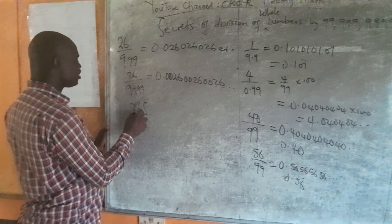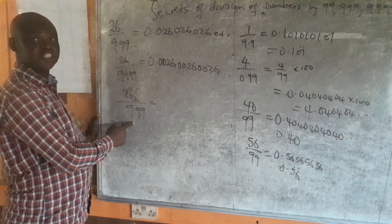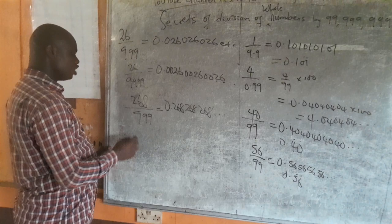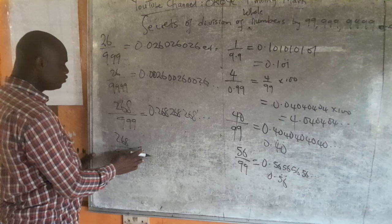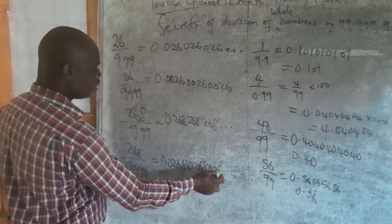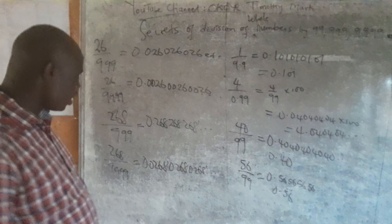If you go to a three-digit number, like 268 over 999 — you don't need a calculator. This has three digits and 999 has three digits, so they correspond directly. The answer is 0.268, 268, 268... and so on and so forth. And for 268 over 9999, since it doesn't correspond, you make it 0268 to match four digits, giving 0.0268, 0268... repeating.